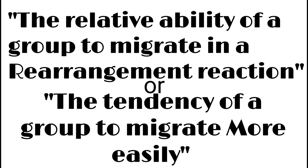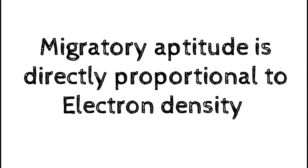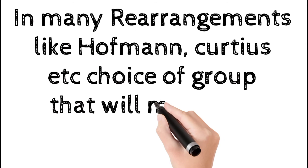We define migratory aptitude as the relative ability of a group to migrate in a rearrangement, or the tendency of a group to migrate more easily. Migratory aptitude is directly proportional to the electron density — the more the electron density, the more the migratory aptitude will be.